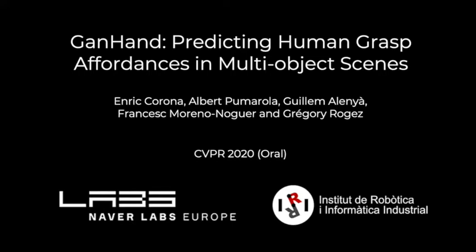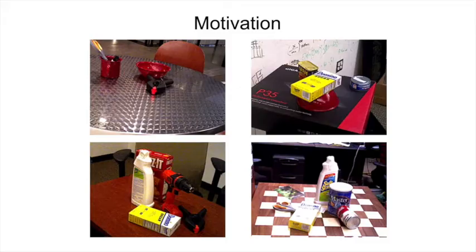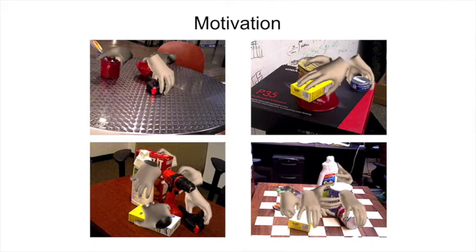In recent years, there's been a lot of progress in estimating hand pose and shape. In this paper, we go beyond this kind of estimation and propose a new task where, given a single RGB image of an object, we want to predict how a human would grasp it.